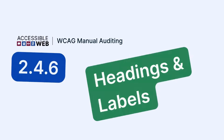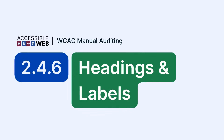Accessible Web — WCAG Manual Auditing. Success Criterion 2.4.6: Headings and Labels, focusing on descriptive label text. In this video, we'll cover how to ensure that all labels clearly describe their purpose for users. Let's jump in.